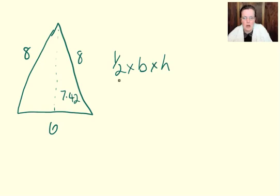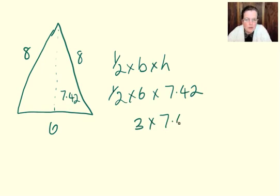So, I'm still going to write half times six times 7.42, which does relate to this height here. So I'm going to do three times 7.42. Off we go. 7.42. Notice I've spread this one out. This is nicely spread out times three.